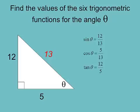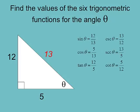If we switch to the other acute angle, that switches all these around. Now let's find the three reciprocals — cosecant, secant, and cotangent — which are just the reciprocals of sine, cosine, and tangent: 13/12, 13/5, and 5/12. Notice sine and cosine are both less than 1, and cosecant and secant are both greater than 1. Tangent and cotangent are on their own — there's no rule about opposite being bigger than adjacent.